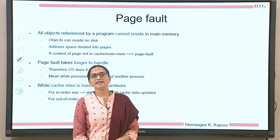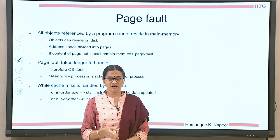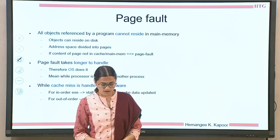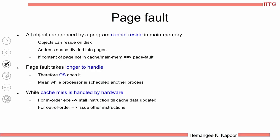Page fault occurs when the page is not there in the RAM and that page needs to be brought from the main memory. As the virtual memory concept goes, objects reside in the disk as well as in the RAM and the space is divided across by pages. The unit of division is called a page, and when you do not find the page in the RAM, it is called the page fault.